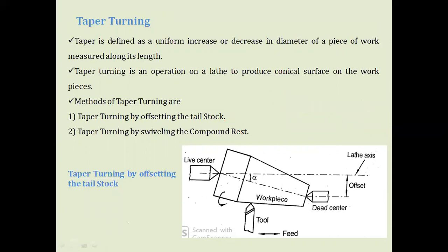In the offsetting method, we shift the axis of rotation of the workpiece at an angle alpha. The cutting tool moves parallel to the lathe axis, but because the workpiece is angled, a conical surface is developed. This method is used to develop conical surfaces — instead of cylindrical surfaces, we get conical surfaces using the offsetting tailstock method.